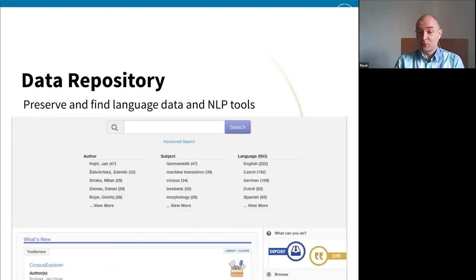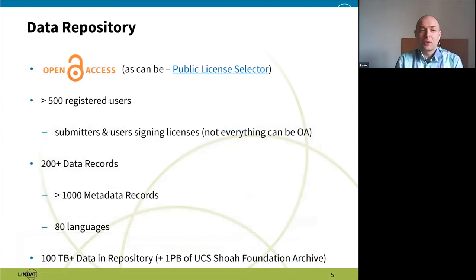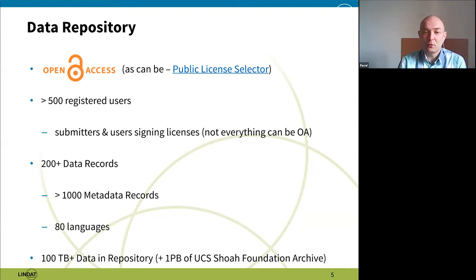From the user perspective, this is what the repository looks like: it has a big search window with some small features to see the newest records and fine-tune the search. The whole repository is as open access as possible. We use something called the Public License Selector — another GitHub project — that allows users to choose as open a license as possible without breaking the law for their dataset. We have more than 500 registered users. Registration is only required for submitting data or for signing a license for restricted datasets.